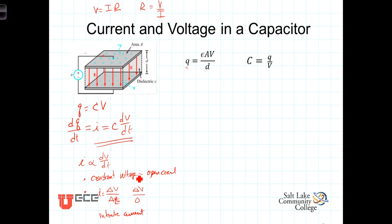Constant voltage means the voltage isn't changing, so there is no current, but you can have a non-zero voltage there. The second observation is that you can't instantaneously change the voltage because doing so would require an infinite amount of current.